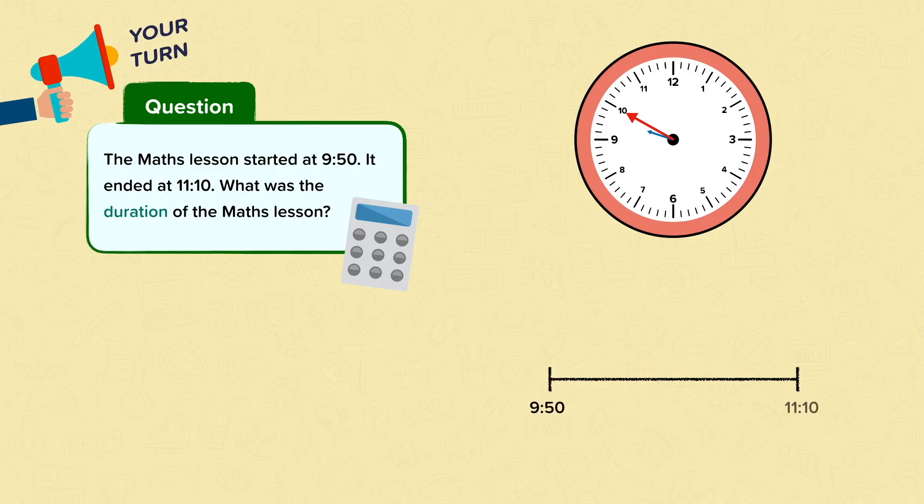So we create another number line which starts at 9:50 and ends at 11:10. We count on 10 minutes to the nearest hour, 10 o'clock, an hour to 11 o'clock, and then another 10 minutes to 11:10.